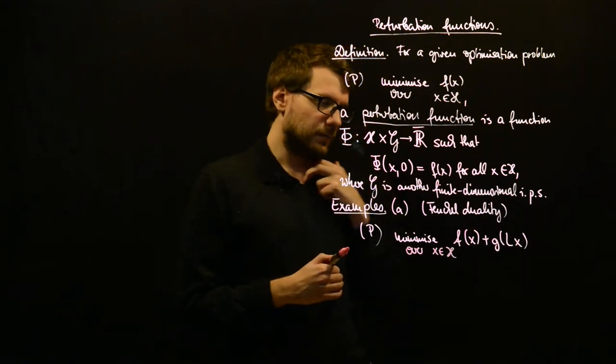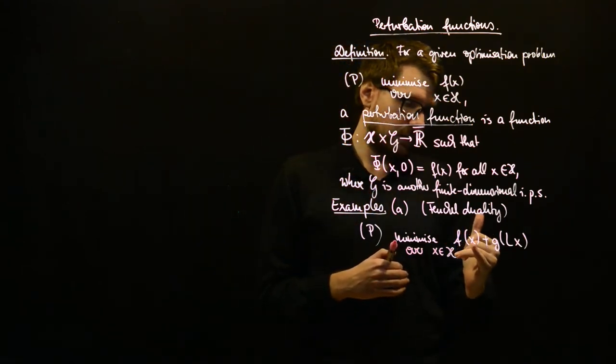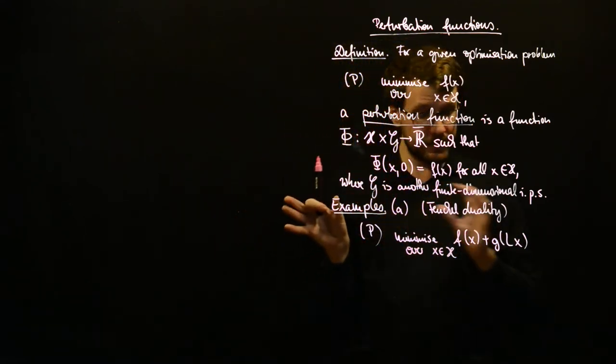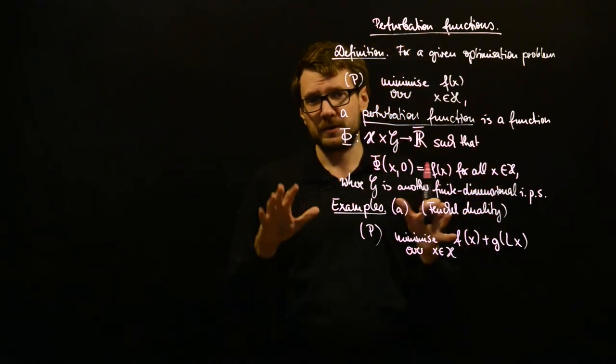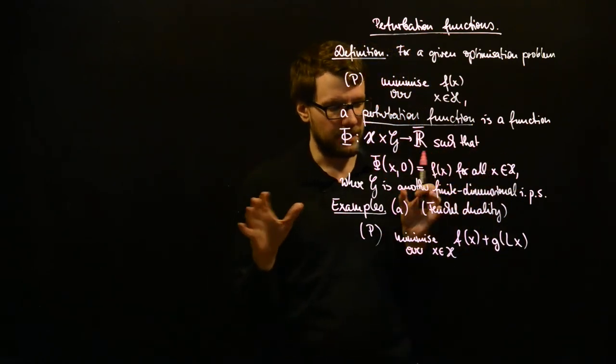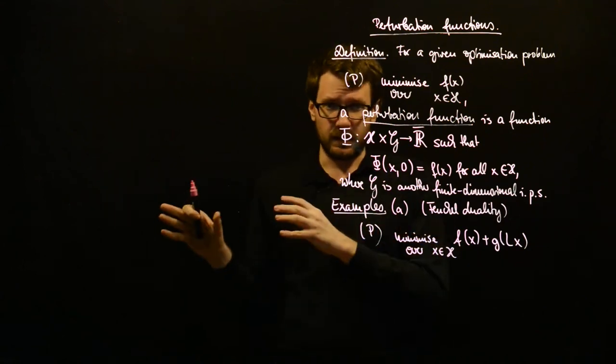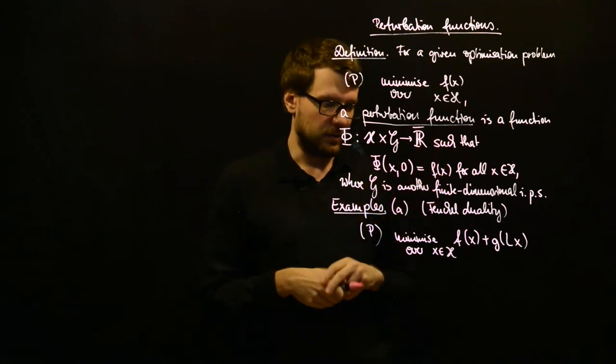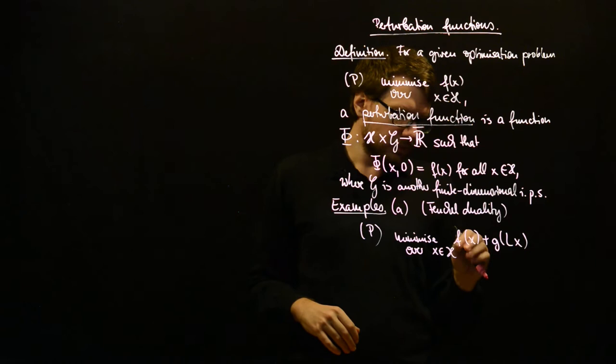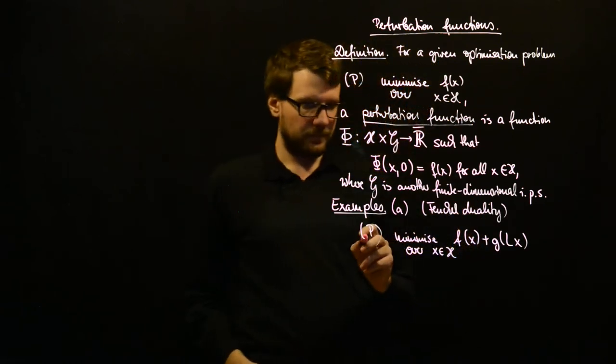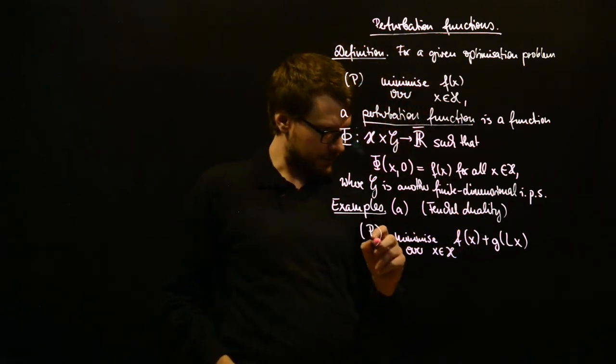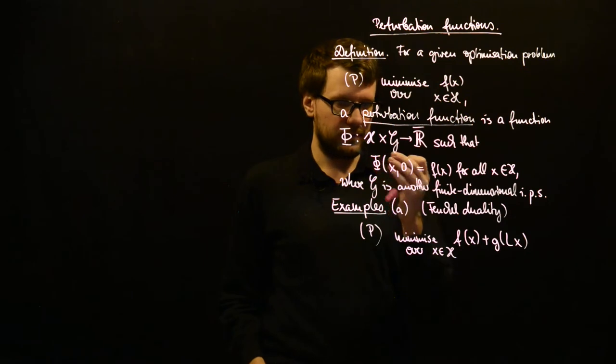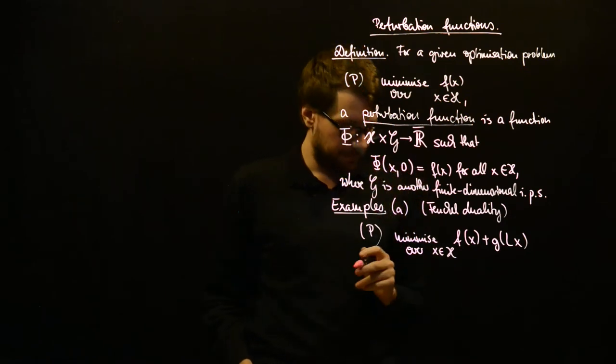And the motivation here is that we have, we can somehow decompose our objective function into two parts. And these two parts may have different functions or may serve different purposes. For example, f can penalize different things than g does in your model. And let's first fix the spaces here, and then I will come to some reasonable choice for phi.